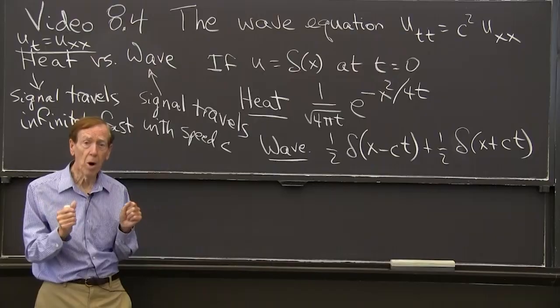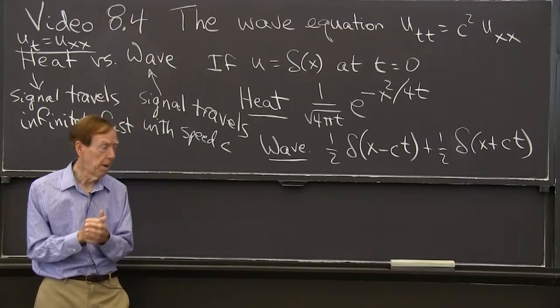So you get a big shock and it comes to you with speed c. If you look at that expression x minus ct, it's telling you that the speed of the wave, dx/dt for the wave, is c. So that's a contrast for a very particular initial condition. Big wall of water, a big noise, a big bang.